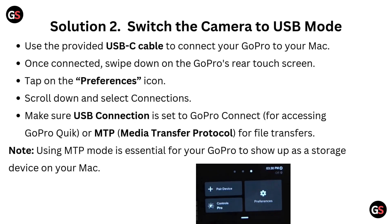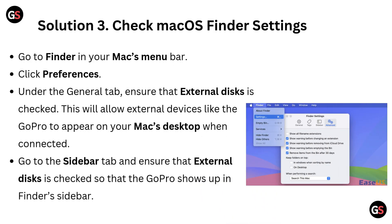Solution 2: Switch the camera to USB mode. Use the provided USB-C cable to connect your GoPro to your Mac. Once connected, swipe down on the GoPro's rear touchscreen. Tap on the Preferences icon, scroll down and select Connections. Make sure USB connection is set to GoPro Connect for accessing GoPro Quick, or MTP (Media Transfer Protocol) for file transfer. Note: using MTP mode is essential for your GoPro to show up as a storage device on your Mac.